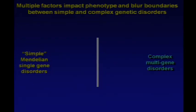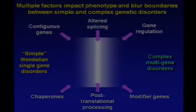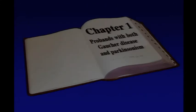To recap: the two groups once considered as simple Mendelian single gene disorders versus complex disorders are blurred by many different factors that could include molecular chaperones, post-translational processing of protein, modifier genes, and so on. Now I'm going to begin the story of the relationship between Gaucher disease and Parkinson disease.